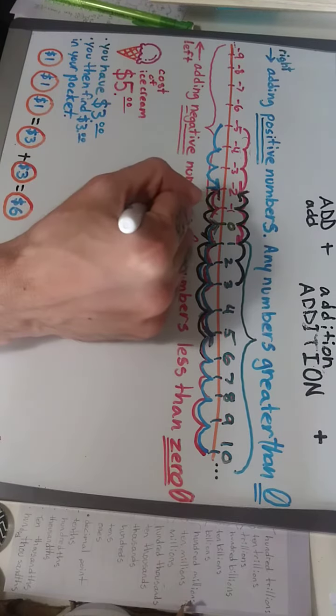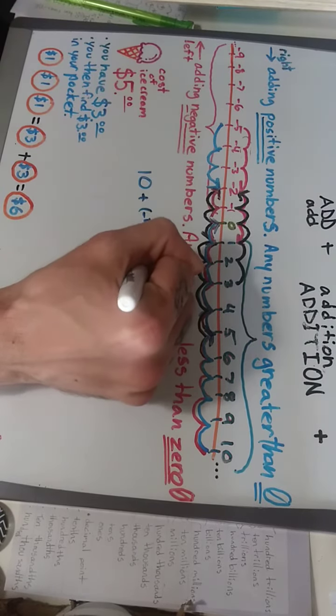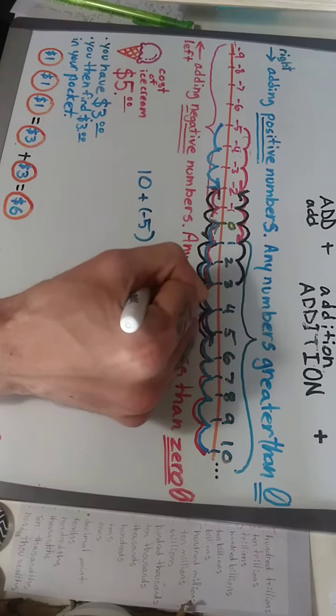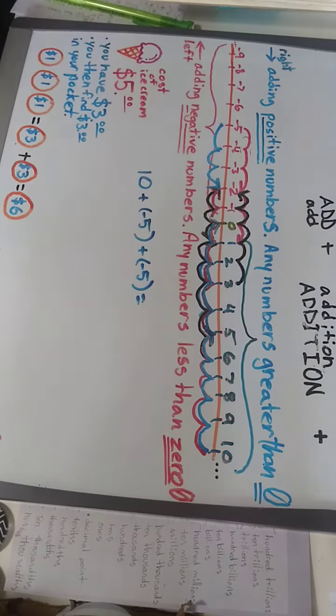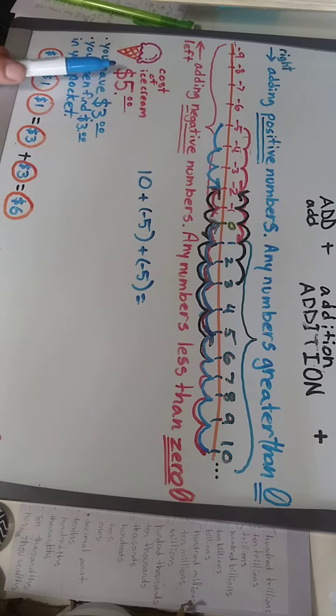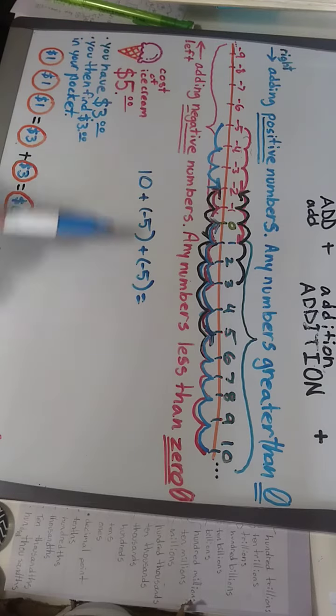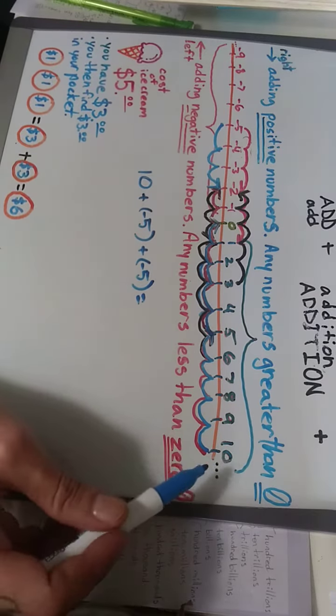plus negative five plus negative five equals... So in one transaction we have ten dollars and we're buying the two five dollar ice creams in one transaction, so we start at the ten